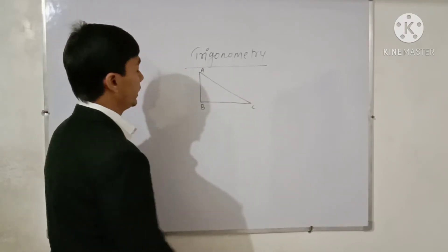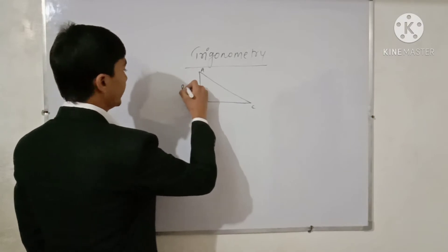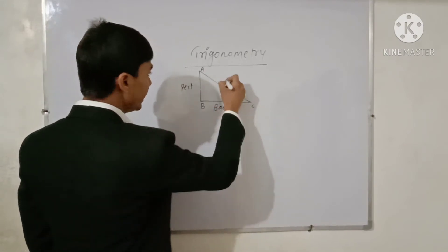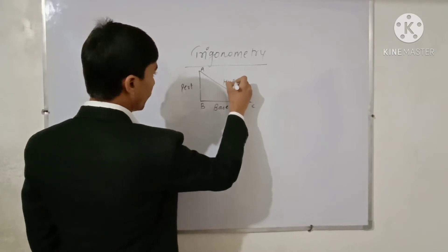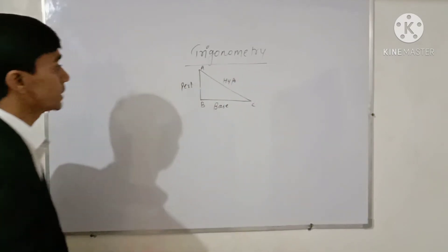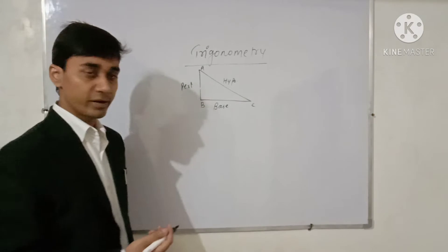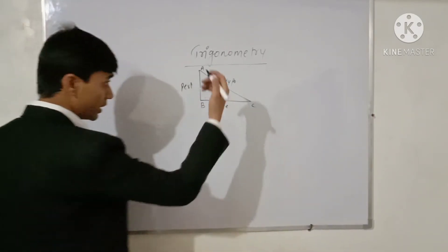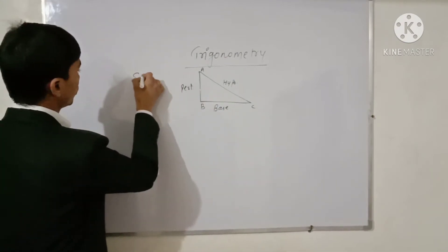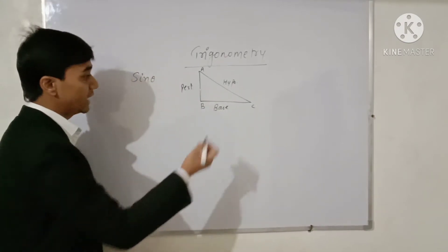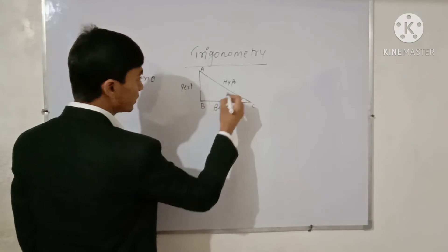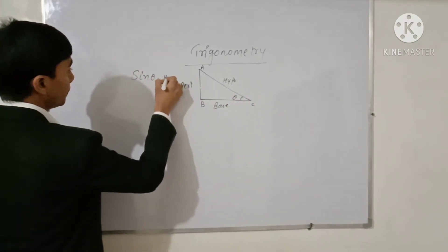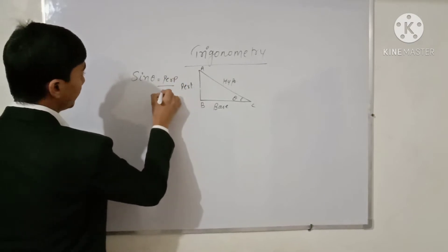Let us consider triangle ABC in which AB is the perpendicular, BC is the base, and AC is the hypotenuse. Now we will define some important Trigonometric ratios. Suppose we take angle C as theta. Then sin theta is defined as perpendicular upon hypotenuse.